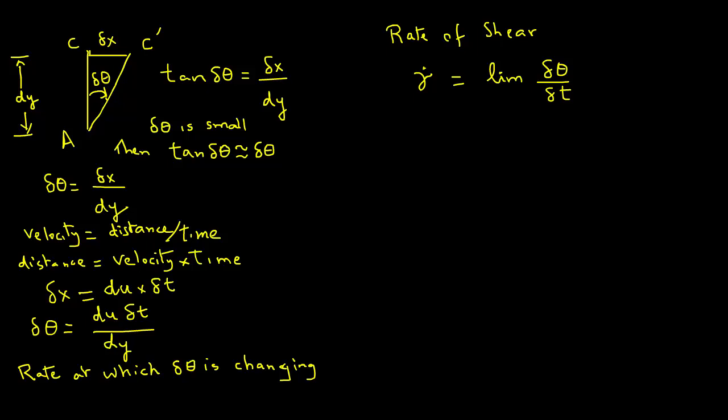We can replace this delta theta from what we obtained earlier, which was du delta t over dy divided by delta t. So delta t will cancel out, and gamma dot will equal du over dy. So the shear rate is the change in the velocity divided by the distance between the plates. It is du over dy.